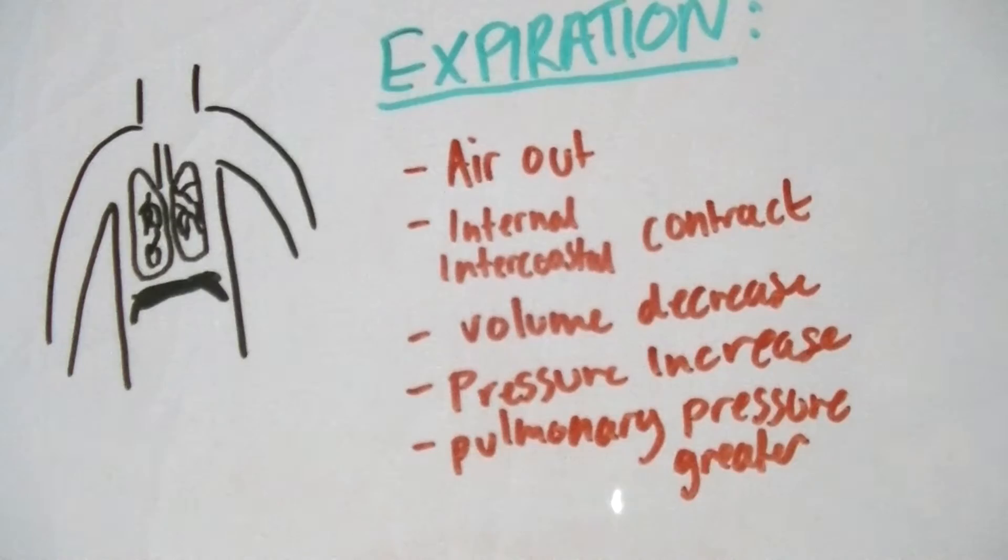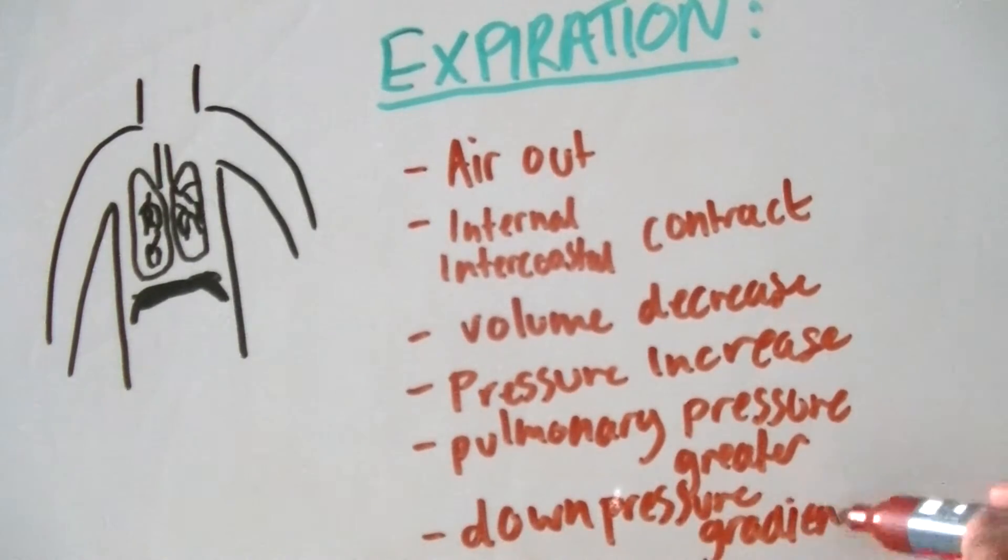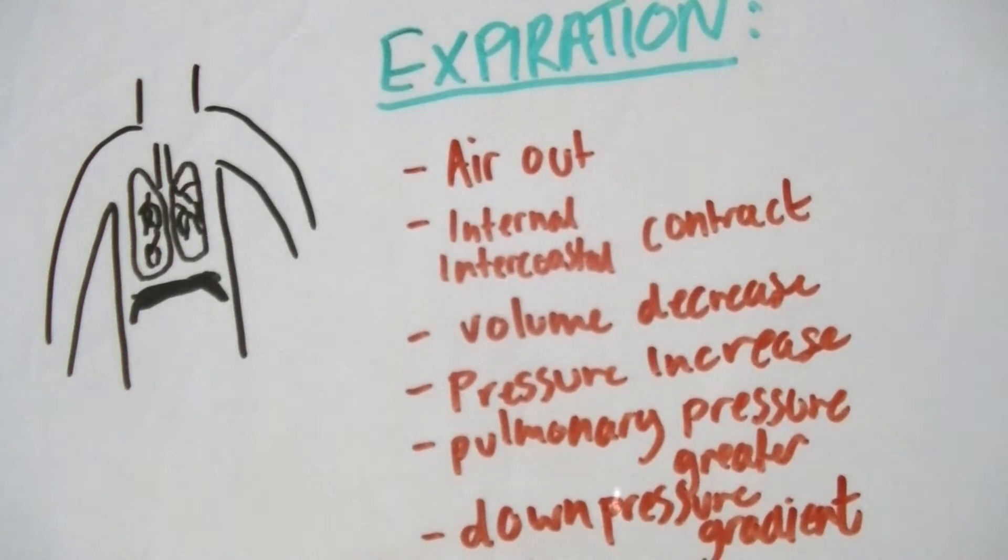The next example we're going to look at is inspiration. This is when air moves into the lungs. During this, external intercostal muscles contract and internal intercostal muscles relax. The ribs are pulled upwards to increase the volume in the thorax.